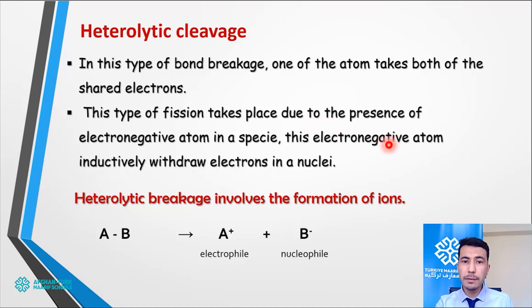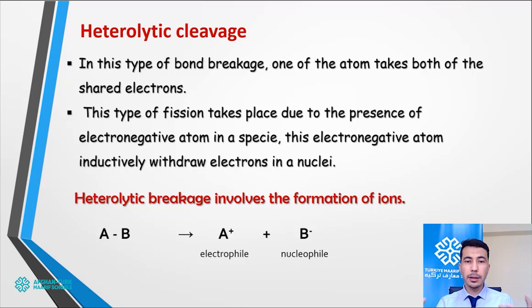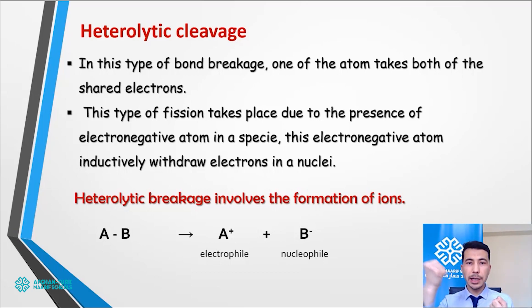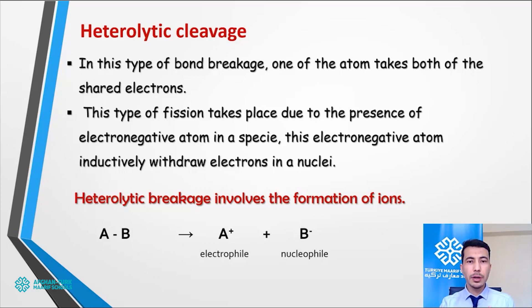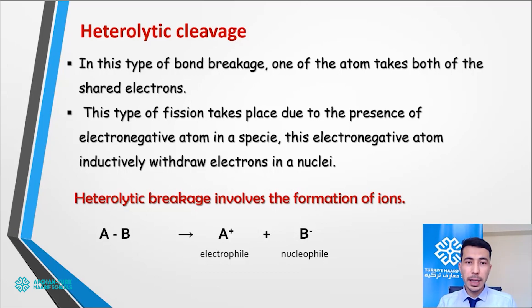This type of fission takes place due to the presence of an electronegative atom in a species — which could be a molecule. This electronegative atom inductively withdraws electrons. If one atom is electronegative and the other is electropositive, the electronegative atom pulls the electrons and does not allow the other to take them. When the bond breaks, the electronegative atom gets a negative charge because it has an extra electron, and the electropositive one gets a positive charge because it has fewer electrons. This kind of fission forms ions.